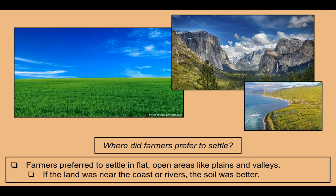Where did farmers prefer to settle? They preferred flat, open areas like plains and valleys. Plains like the one on the left — very good, green grass, easy to grow crops. For valleys, this is Yosemite, one of the most famous national parks in California. You can see mountains on the left and right with flat land in between — Yosemite Valley. If the land was near the coast or rivers, the soil is better, like the green land on the right that looks very good for growing crops right next to the coast.